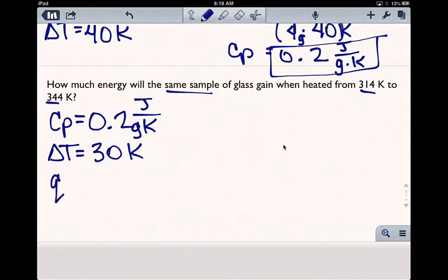This time we're going to be solving for Q, and the mass, of course, is the same, because it's the same sample, which was 4 grams. So again, using Q equals m C sub P delta T. Plug everything in.